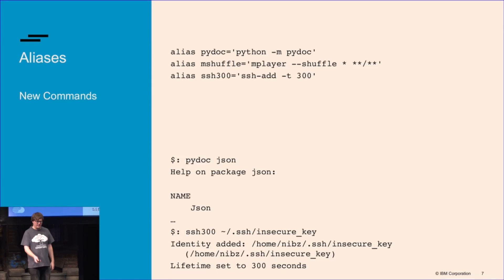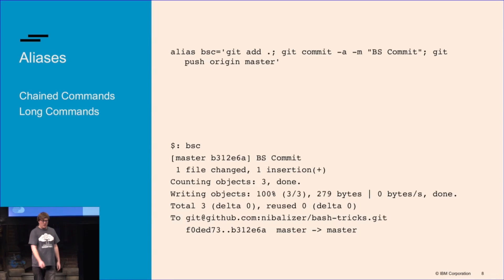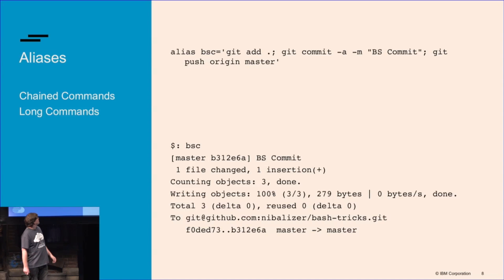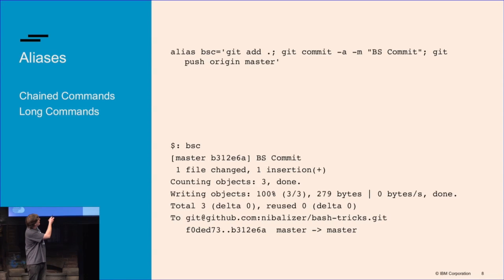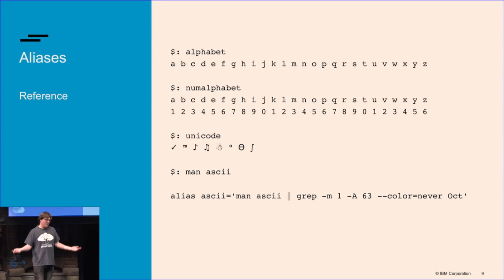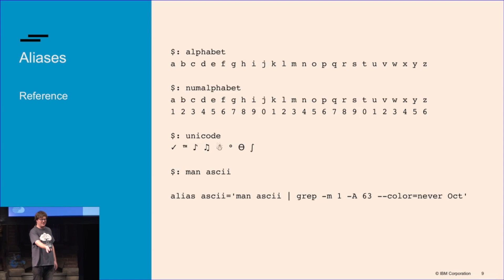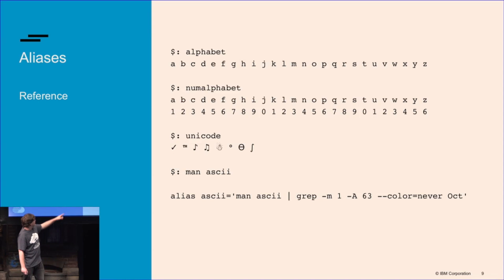'mshuffle' will just pick which episode of Next Generation I'm watching today. This one is 'I'm going to lunch and it's time for things to be on the server' — just a BS commit. What's meant to demonstrate is you can put a semicolon in an alias, so you could go totally nuts. I don't know the alphabet, so I have a command that will dump the alphabet, and I have a command that will dump the alphabet with numbers so I can see that K is the 11th letter. I need Unicode Snowman available, and I need the ASCII table — 'man ascii' will give you the ASCII table, but that one will take it out of man and dump it into a cleaner table.